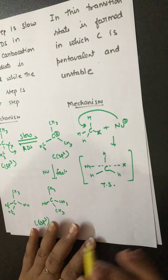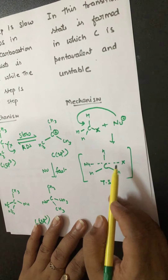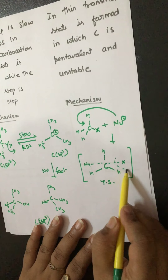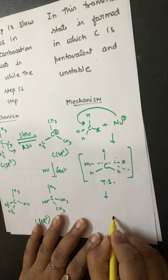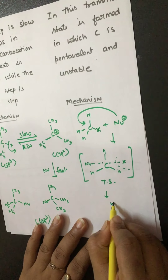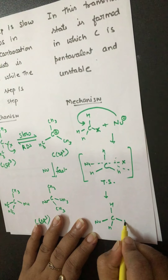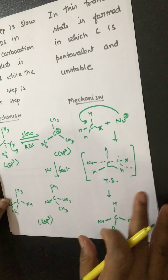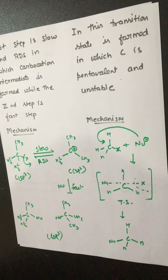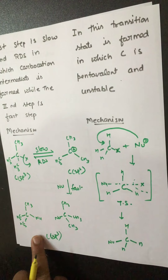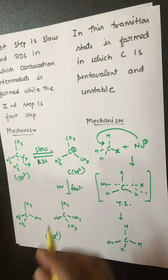The transition state is unstable. Finally, this bond will break down and the product will form. That was SN2 type of mechanism. This one is SN1 and this one is SN2 type of mechanism.